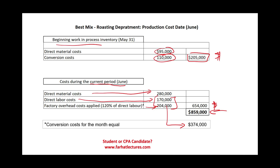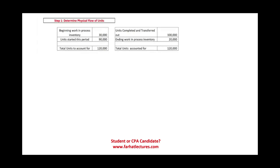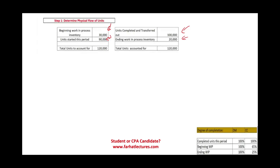Computing the physical flow: 30,000 beginning WIP plus 90,000 units started equals 120,000 to account for. On the other side, 100,000 units completed and transferred out plus 20,000 ending WIP equals 120,000. Beginning WIP was 65% completed and ending WIP was 25% completed.